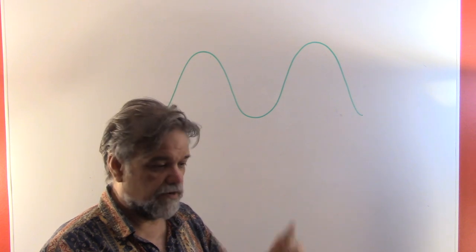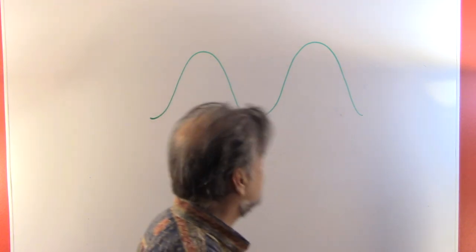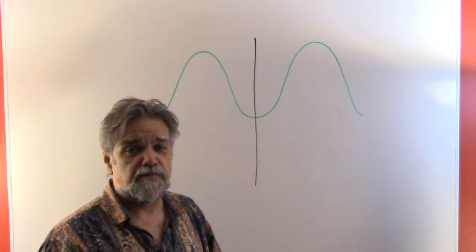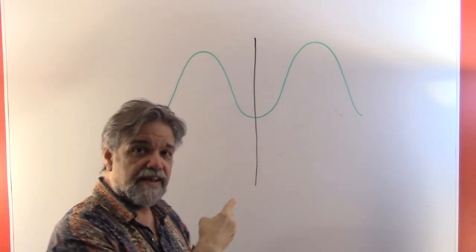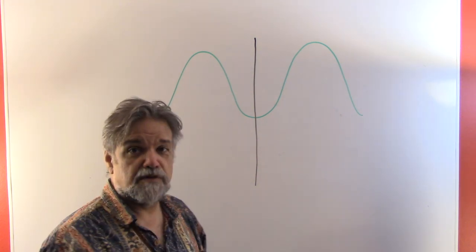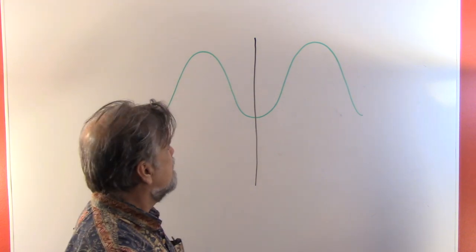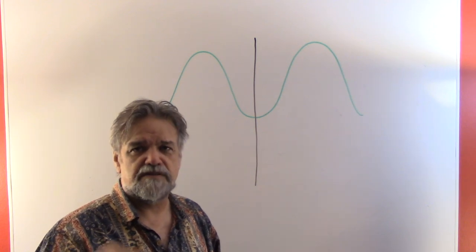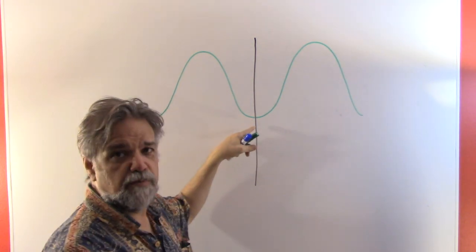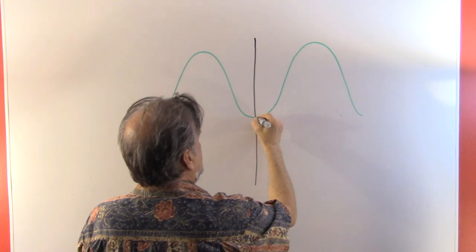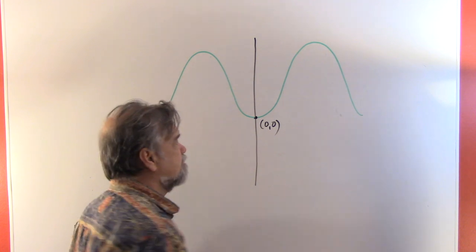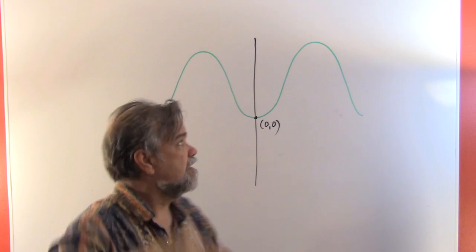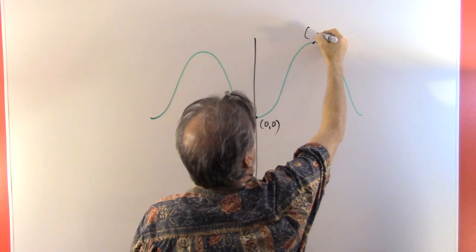We're starting from the low point, so let's put our y-axis there. Starting from the low point means we have a negative cosine function, because negative cosines start from the low point. Since the questions ask how far the buoy is from its low point, the low point is our point of reference — we'll call that (0, 0).